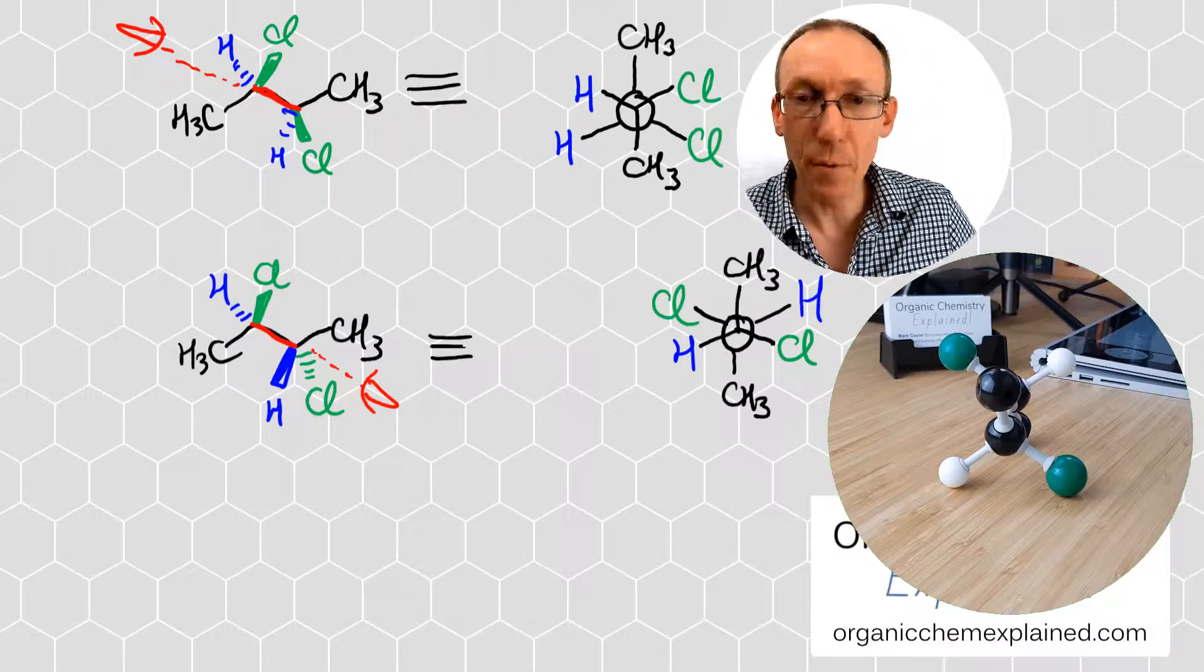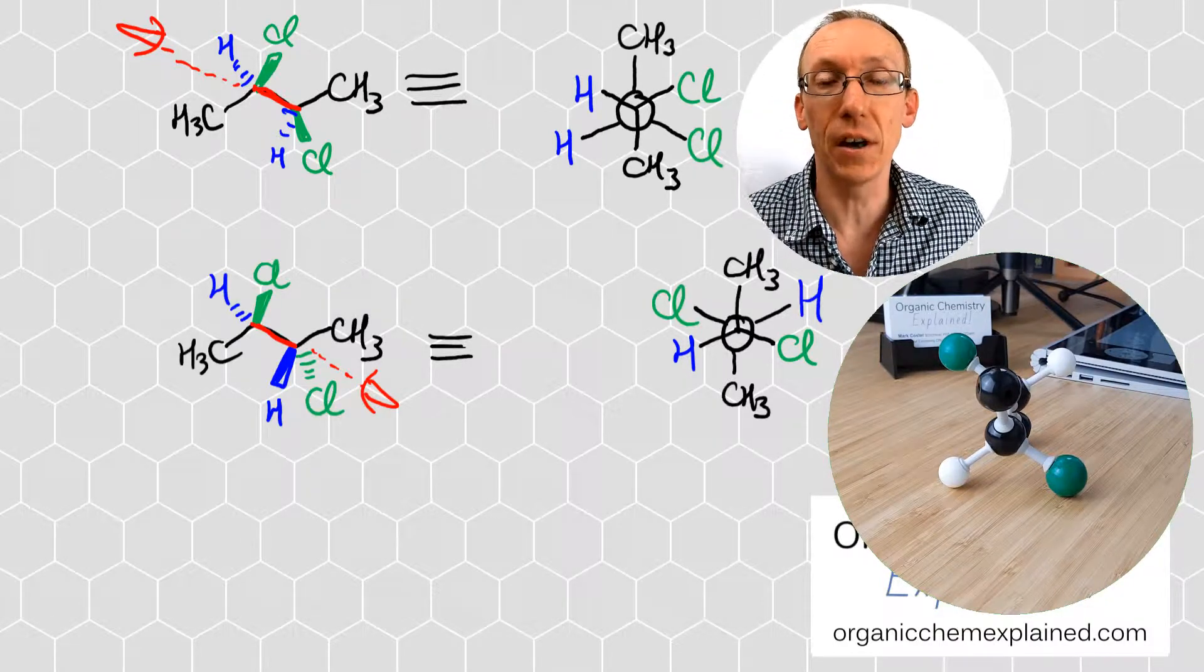And a hydrogen atom that I'm holding on to over here is up and to the right. And then we've got a Newman projection for this other diastereomer of that molecule.